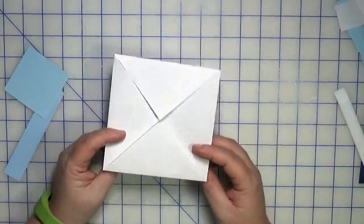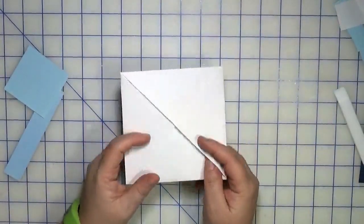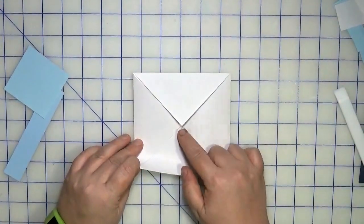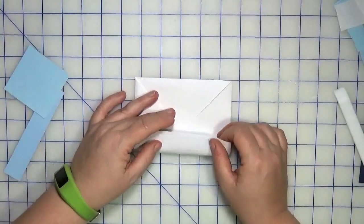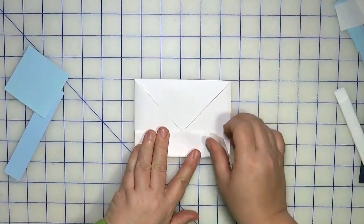So once you have your square looking like this with all four triangles pointing in, you're going to take one end and you're going to fold it to the midway mark. So you're just going to use the points where the triangle points meet as a guideline.